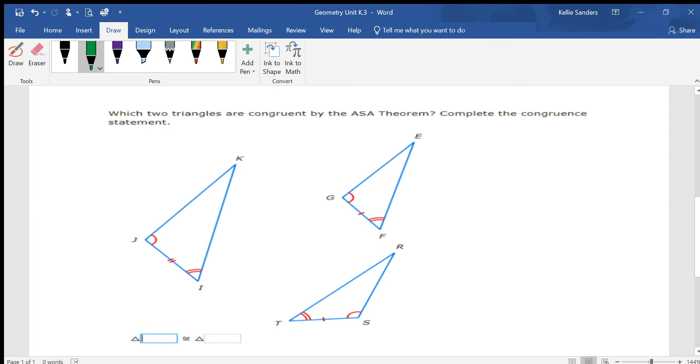Angle Side Angle - two angles in a row with a side between them. Okay, all of these are Angle Side Angle because they're two angles and then a side between them.